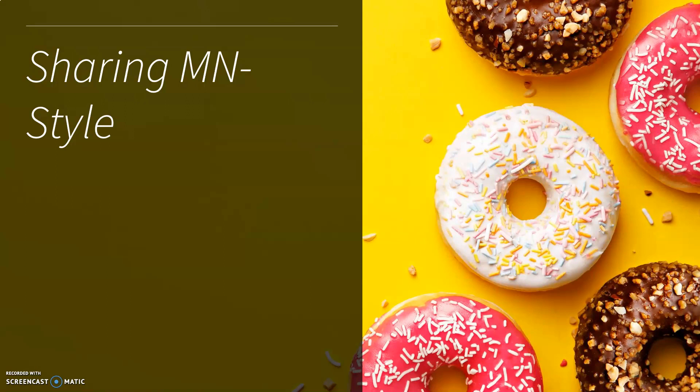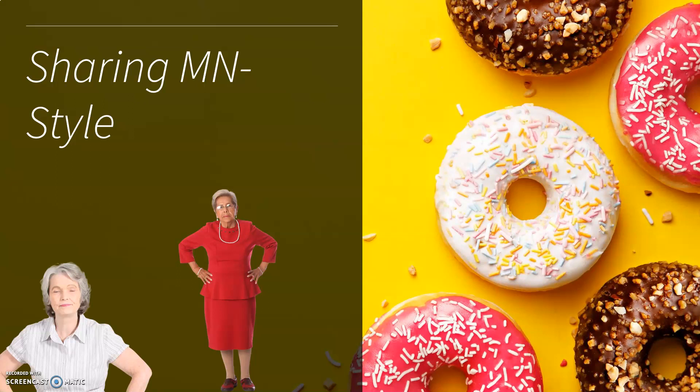Many of you have been in a situation where there are donuts out. You're in Minnesota, and Betty comes along and she wants to have her favorite white donut with sprinkles, but there's Lois, and Lois also likes the white donut with sprinkles.